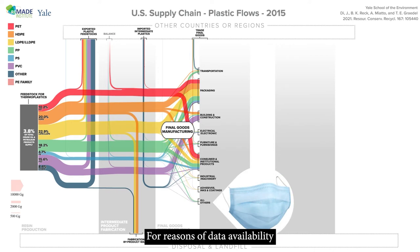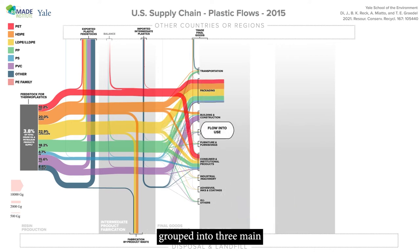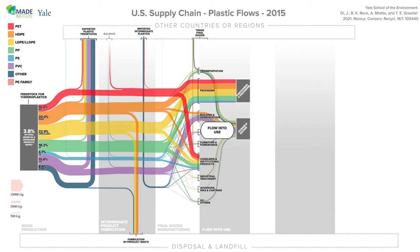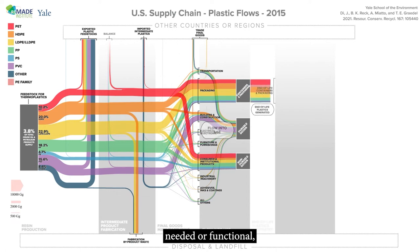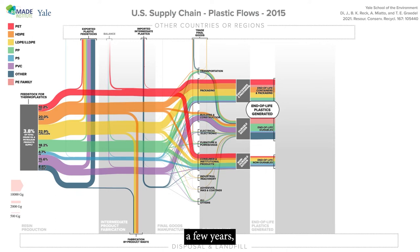For reasons of data availability, these end-use sectors are then grouped into three main categories: containers and packaging, durable goods, and non-durable goods. Once products are no longer needed or functional, they reach the end of life. The average lifetime of packaging is less than a year, of non-durables a few years, while it can be decades for some durables.